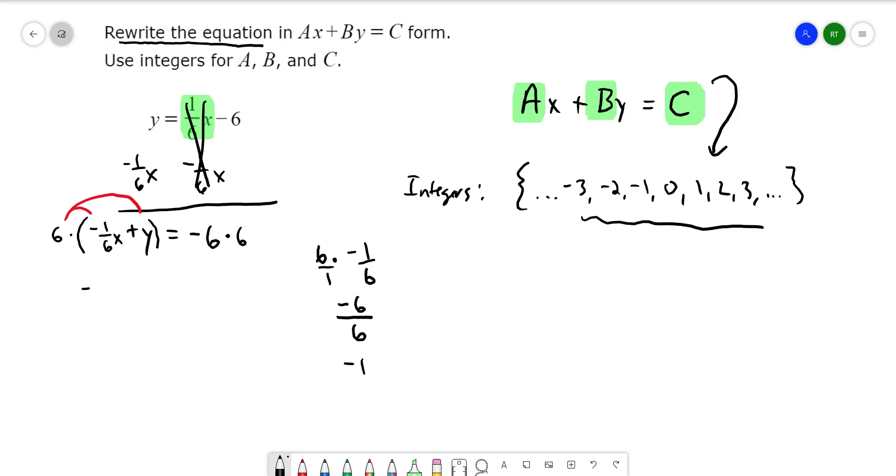So the first term is negative one X. And then I do six times Y, which is six Y. Bring down my equal sign. And negative six times positive six is negative 36. And as you can see, I have my X term is on the left, the Y term is on the left, and the constant is on the right. And notice there are also no fractions, no decimals in my equation. And this is what we call standard format.